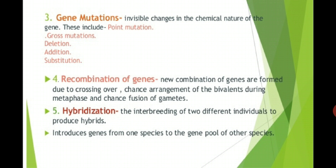The third source of genetic variability is gene mutation, which involves invisible changes in the chemical nature of the gene. This includes point mutation, cross mutation, deletion, addition, and substitution.